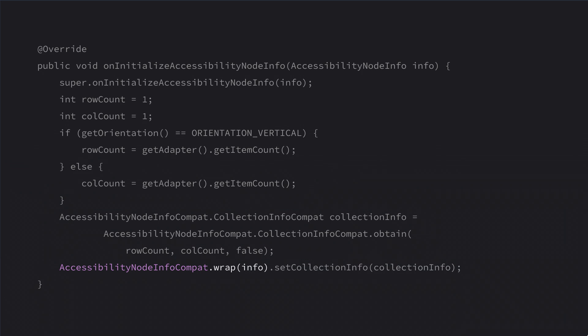You may wonder why everything here uses AccessibilityNodeInfoCompat and why we're wrapping the original AccessibilityNodeInfo. AccessibilityNodeInfo is an object in the platform; AccessibilityNodeInfoCompat is an object in AndroidX. We ask app developers to wrap their node infos in node info compats because it allows us to backport APIs and bug fixes back to API 19. In general, this is just good practice even if you're not using a new API unavailable on an older device.